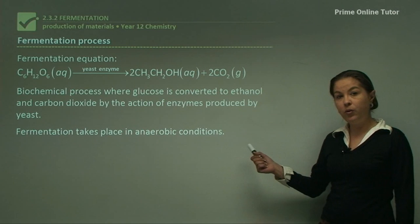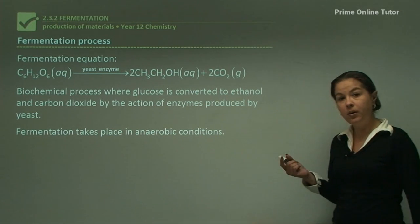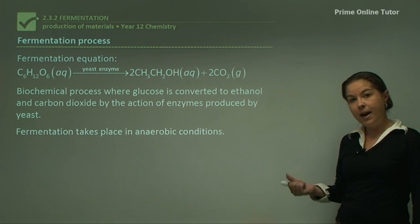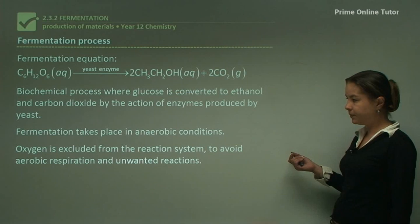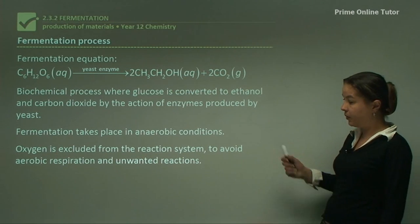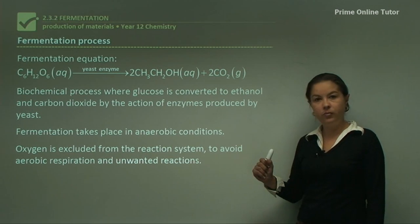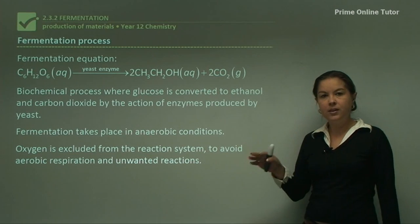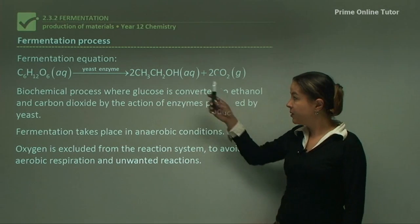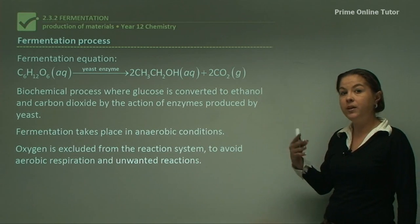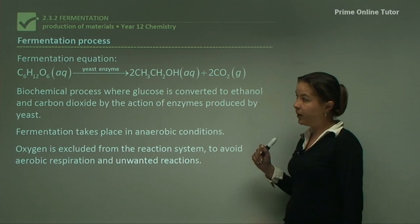Fermentation takes place in anaerobic conditions, which means without oxygen. We also use this word in microbiology to describe aerobic bacteria, which grow in oxygen, and anaerobic bacteria, which grow without oxygen. We exclude oxygen from the reaction system during fermentation for a few reasons — to avoid aerobic respiration and unwanted reactions. If we had lots of different reactions going on simultaneously, we would get less of the ethanol product that we want.